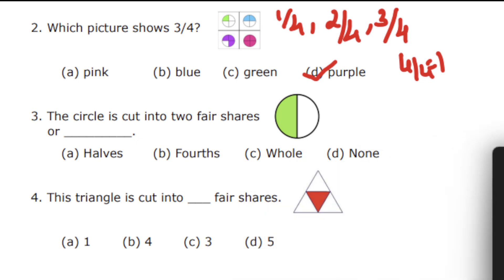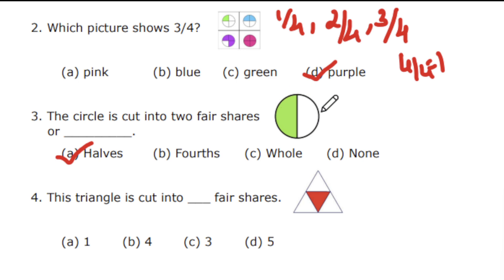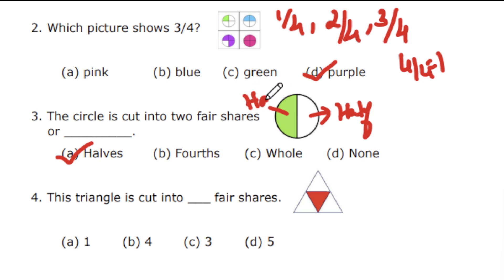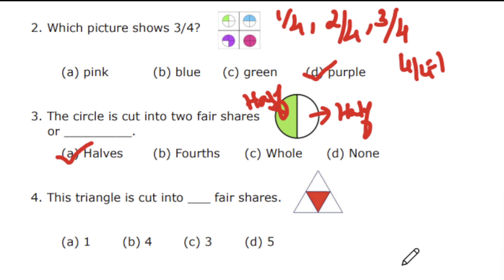30 seconds over. The answer is halves. The whole is divided into two equal parts — this is one half and this one is the second half. So the circle is cut into two fair shares, or halves. It is not fourths, not whole, and none is also a wrong answer.